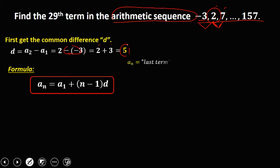Now, this a sub n is the last term. In this case, we need to assume that the last term is the 29th term. Therefore, a sub n is equal to a sub 29.